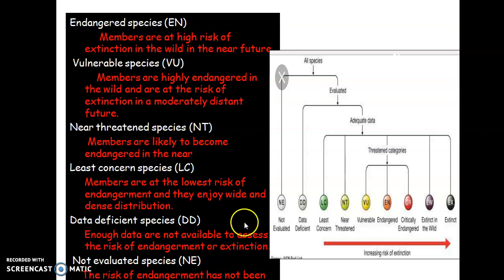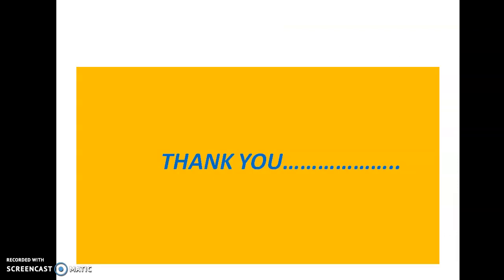Then Not Evaluated species, represented by NE. Here the risk of endangerment has not been evaluated — no evaluation has been done for this particular species on the basis of extinction. So these are the nine different categories of IUCN. I hope you understood. If you have any doubt, please comment in the comment section. Thank you.